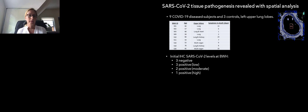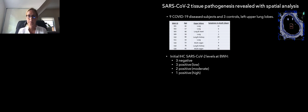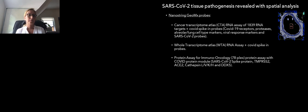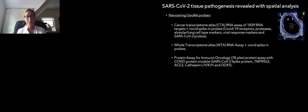We focused on the lung, especially the left upper lung lobe of the distal part of the lung, because we had a lot of single nuclei, single cell sequencing already done on this region. The nine COVID patients have different ages, organ failures, and lengths of disease, very variable. All samples came from Brigham and Women's Hospital, where they did initial immunohistochemistry for viral levels. Three were negative on immunohistochemistry, three had low positive levels, whereas two were moderately positive and one very highly positive.